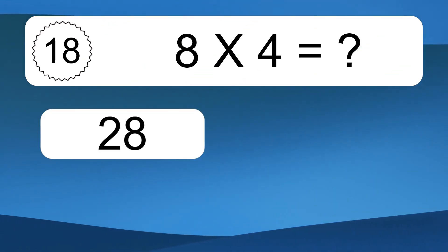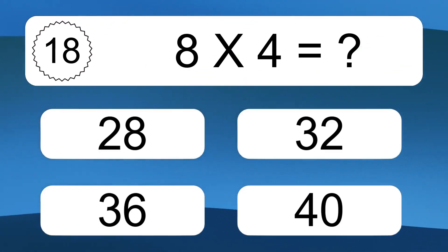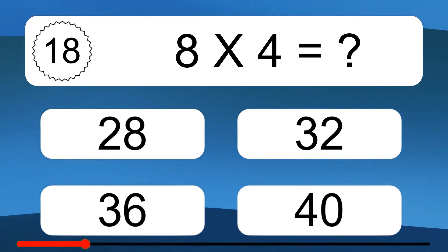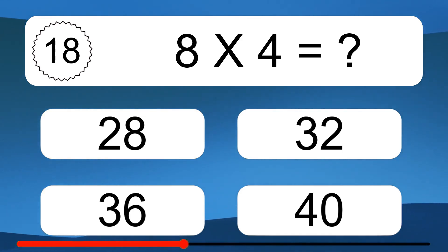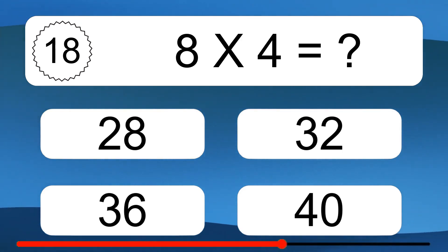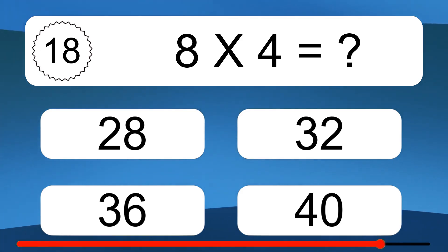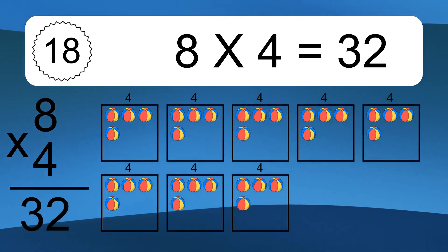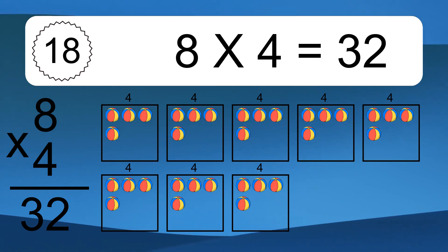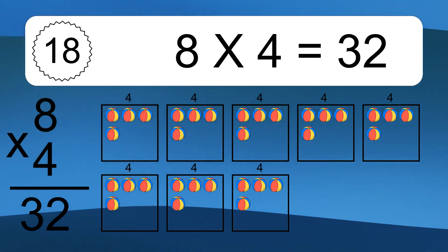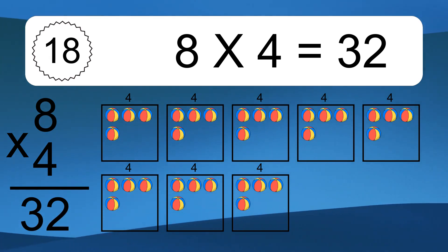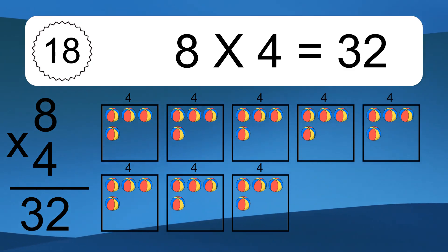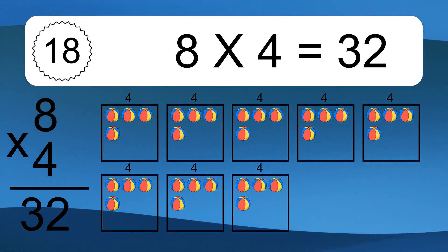8 times 4 equals what? 8 times 4 equals 32. We have 8 boxes and each box has 4 colorful balls inside. If you count all the balls in all the boxes together, you will have 8 times 4 balls. This equals 32 balls.